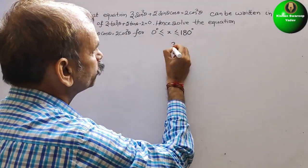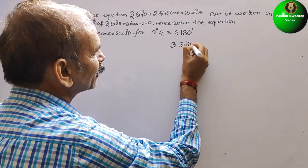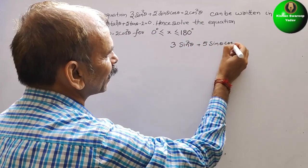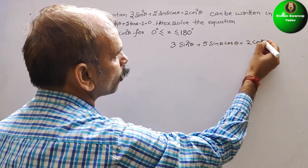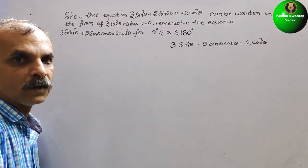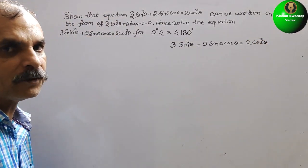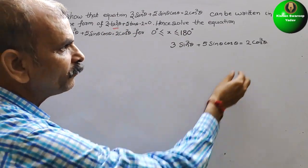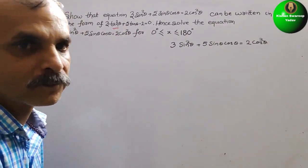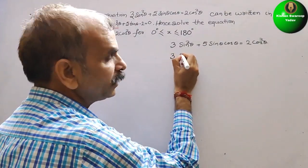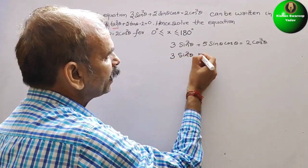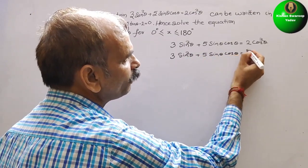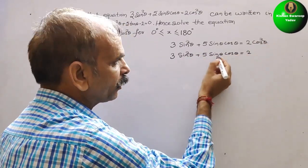They have given 3sin²θ + 5sinθcosθ = 2cos²θ. To make it into tan² form, we divide through by cos²θ. So it becomes 3sin²θ + 5sinθcosθ over cos²θ, keeping only 2 with the cos²θ brought down.